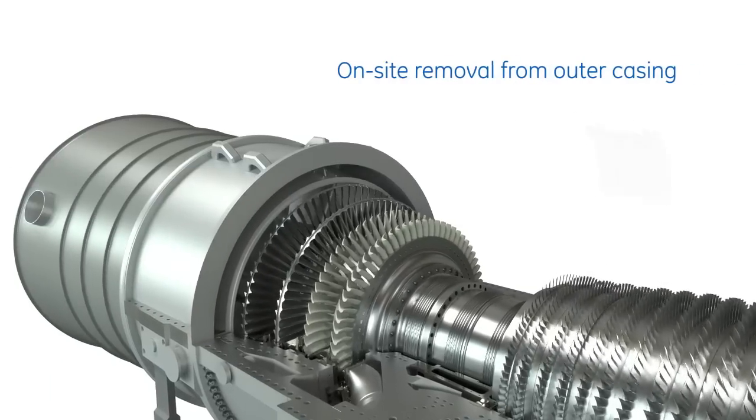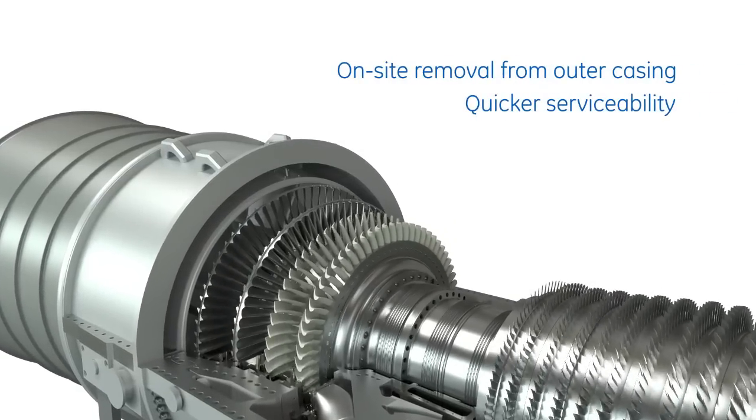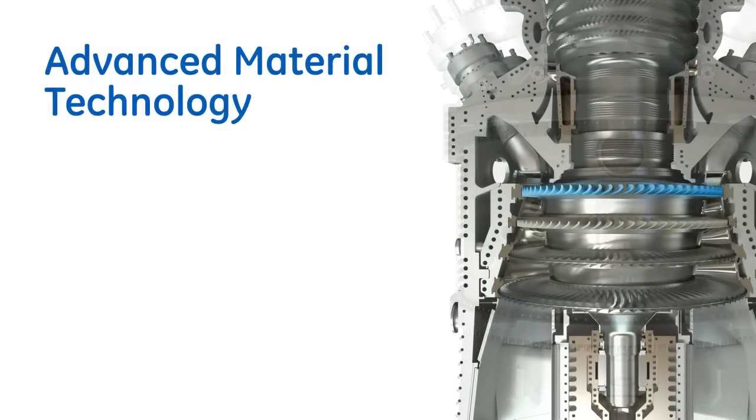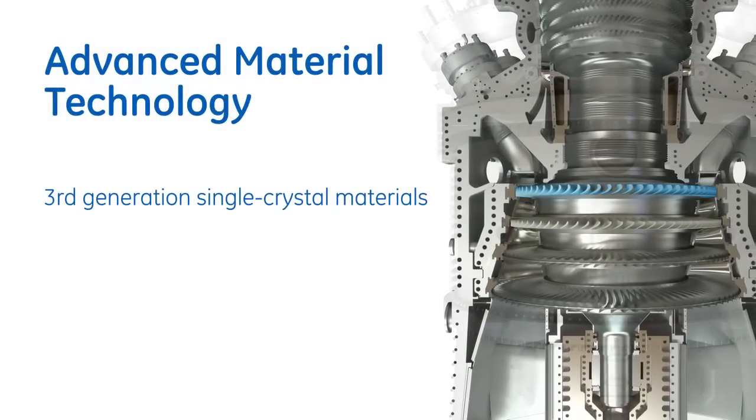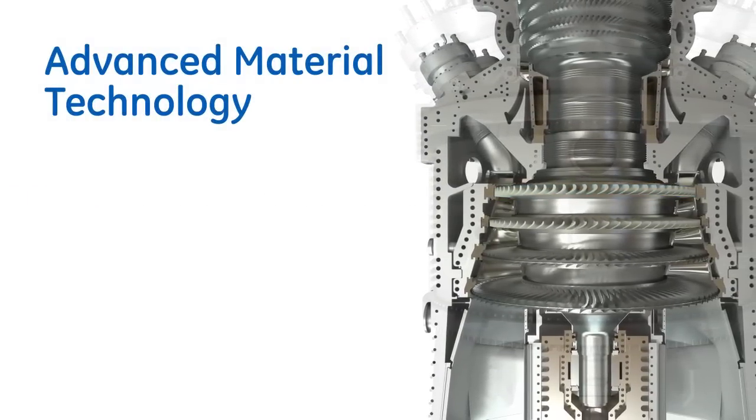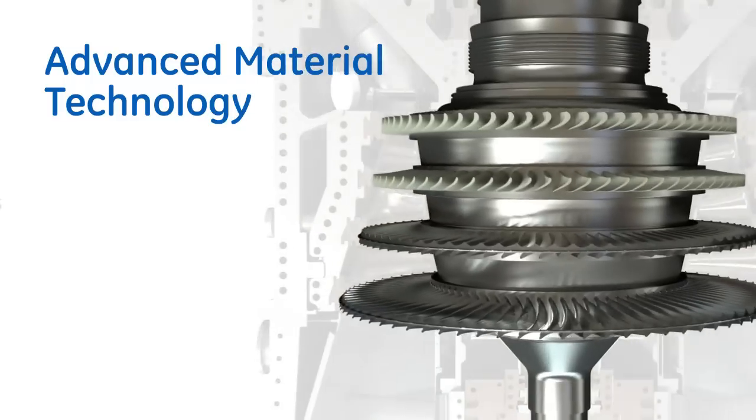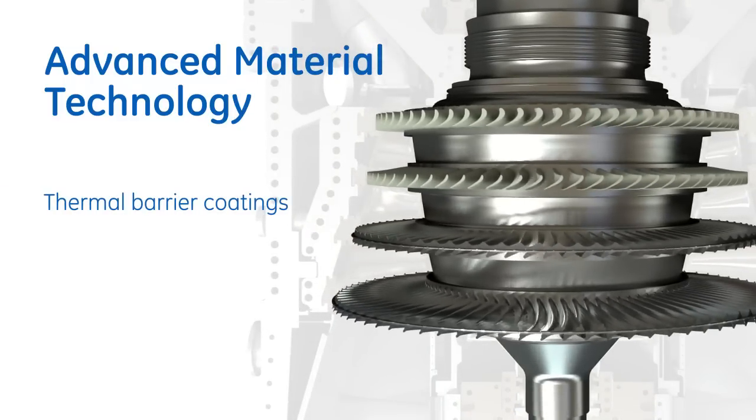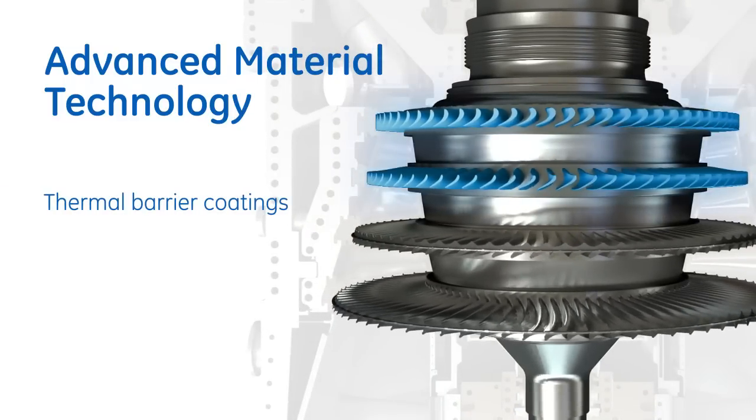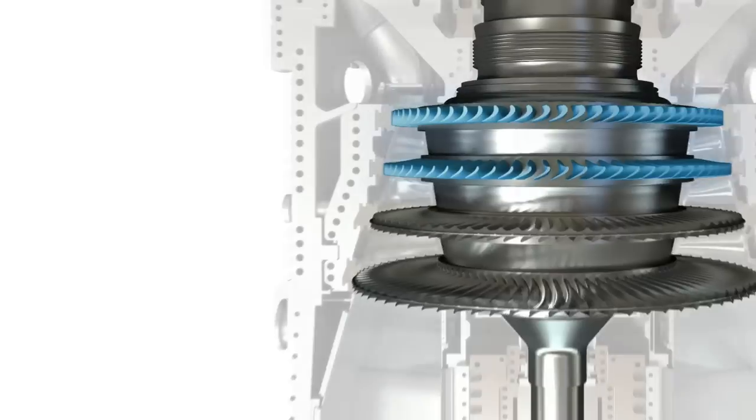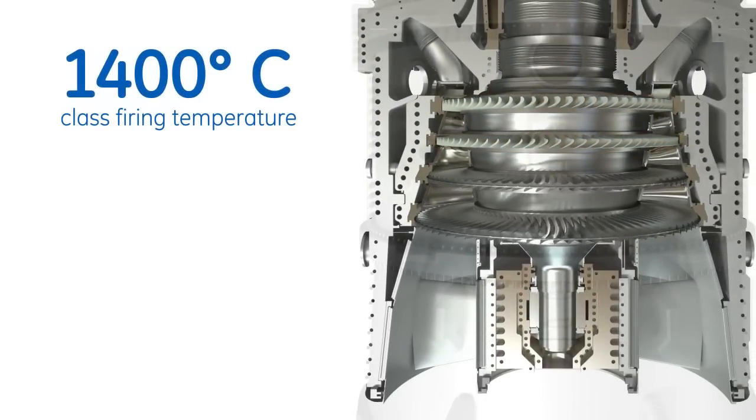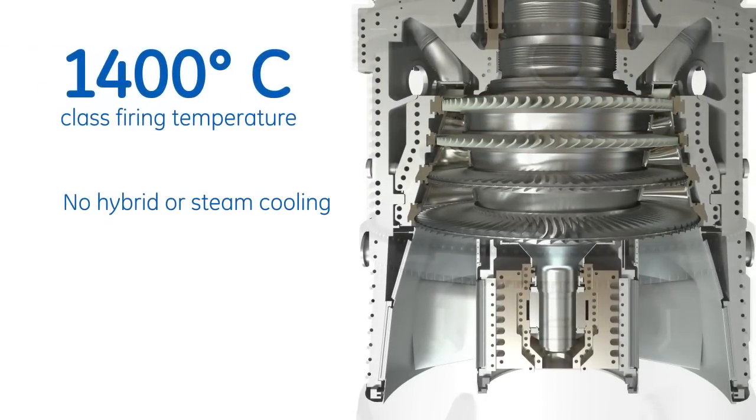The two-piece inner shell can be removed from the outer casing on-site by rotating it out. Stage 1 buckets consist of third generation single crystal materials. The other stages employ directional solidified material for buckets and equiaxial nozzles. Thermal barrier coatings are applied to all stage 1 and 2 buckets. These materials allow for increased firing temperature capability without the need to apply hybrid or steam cooling.